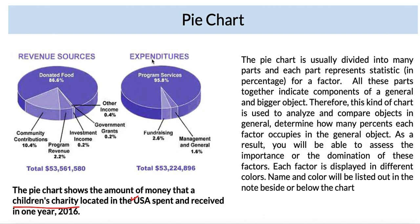We can say 'receipts and payments made in a particular year, 2016, by a charitable organization based in the United States of America.' Try to paraphrase as much as possible to show your lexical ability right in the introduction paragraph. So, I want everyone to write a nice crisp introduction.